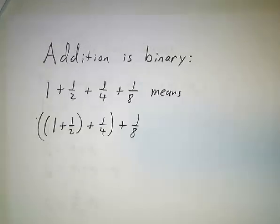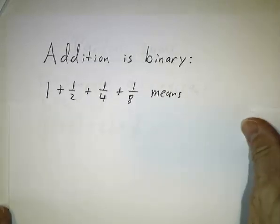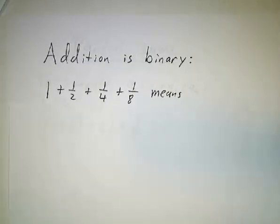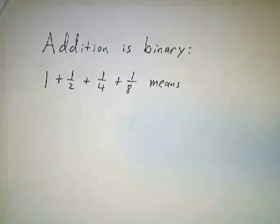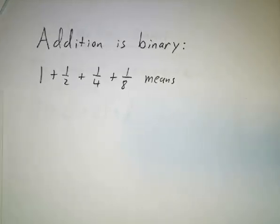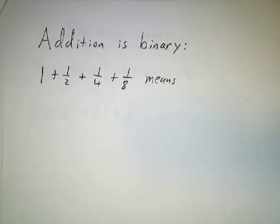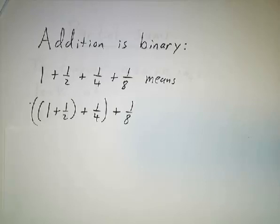Addition is a binary operation. We're used to adding three or four or five numbers, but strictly speaking, when we say let's add 1 plus 1/2 plus 1/4 plus 1/8, it really means: add 1 and 1/2, then add 1/4 to that, then add 1/8 to that. So we've actually got a running sum.